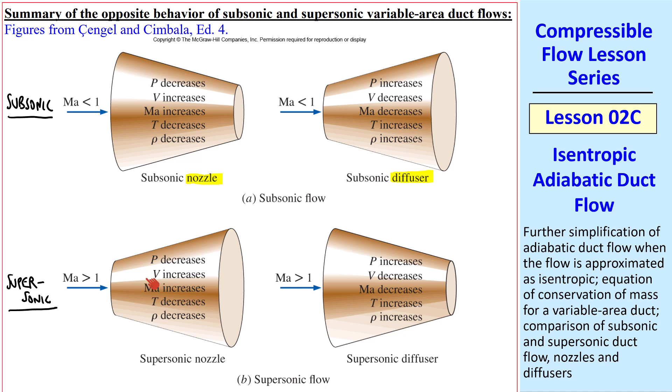For the supersonic case, if we still define a nozzle as causing V to increase, the supersonic nozzle is actually a diverging duct, V increasing and P decreasing. And a converging nozzle is a supersonic diffuser, with V decreasing and P increasing. These are what we're used to, and these are strange the first time you study compressible flow.